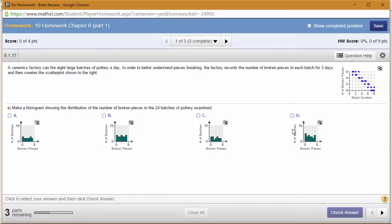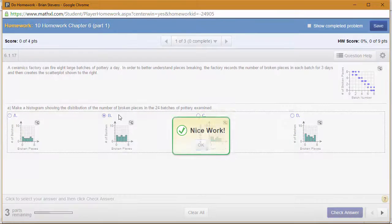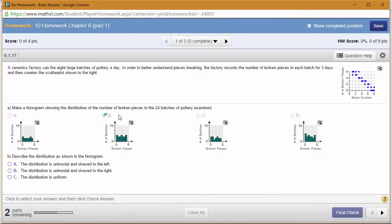Where it says number of batches is not batch number, it's actually the count or frequency. This is a count or frequency bar. It's the count of the batches with this many broken pieces. This blue dot right here is one batch that had zero broken pieces, and there are four batches that had zero broken pieces. Remember, this is a univariate display where the scatter plot is a bivariate display.